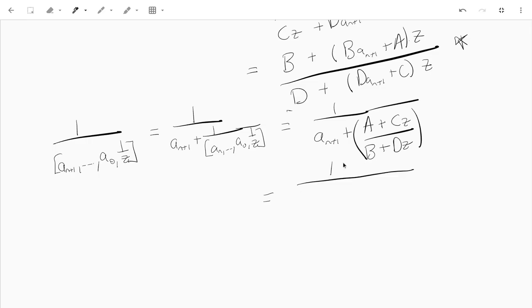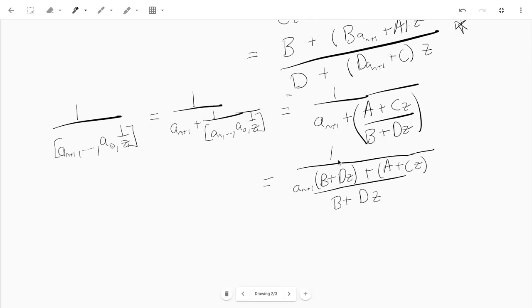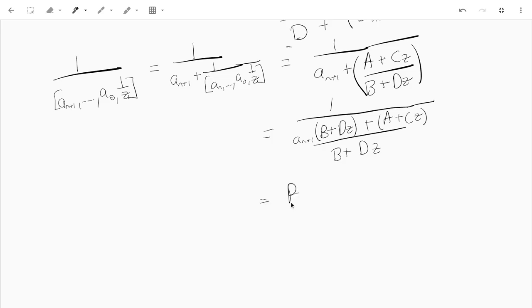First let's put everything on a common denominator. We get a n plus 1, b plus dz, plus a plus c z. So that denominator is in a denominator, so it becomes a numerator. So I get b plus dz. And then in the denominator, I'll gather up all the z's and all the constants. I get a n plus 1 b plus a plus d a n plus 1 plus c times z.